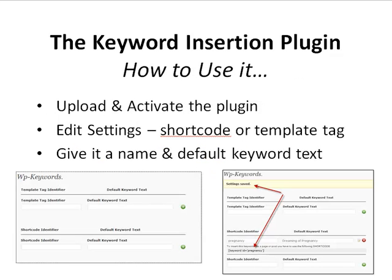Here's how to use it. If you've ever used a plugin before, you'll have no problems with the keyword insertion plugin. You simply upload and activate it through WordPress's built-in plugin section, then go and edit the settings. It allows you to dynamically insert the keyword using either a shortcode or a template tag. A shortcode is a small bit of code you copy and paste into your page or post wherever you want something to appear — it's the easiest method for beginners. A template tag requires edits to the WordPress template files and is more for advanced users.